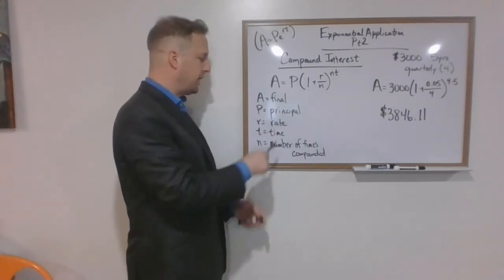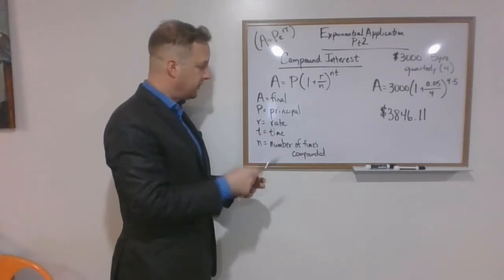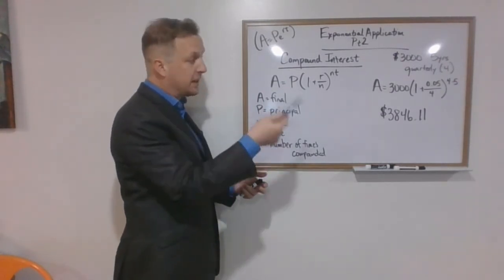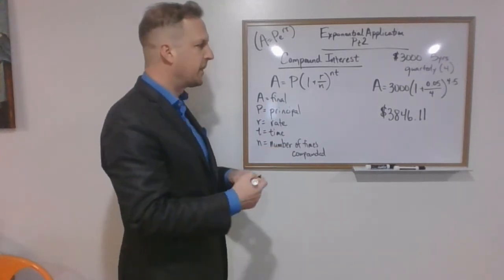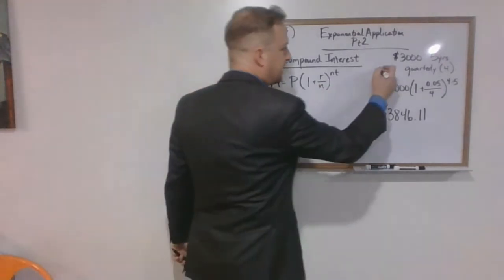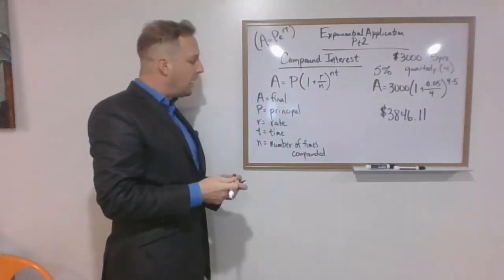So here's the formula. We have a final amount which is what we're going to be looking for here. Principle, remember, is how much we start with, that's $5000. We've got our rate which we're going to state as a decimal, and I didn't put the rate there, although it's hidden in what I talked about, it pays us 5% interest.